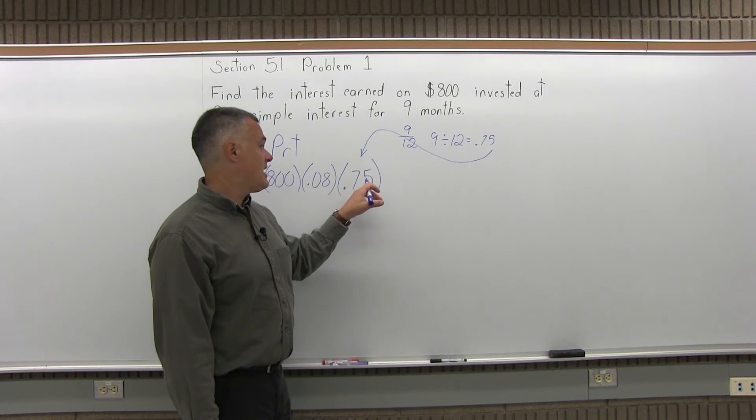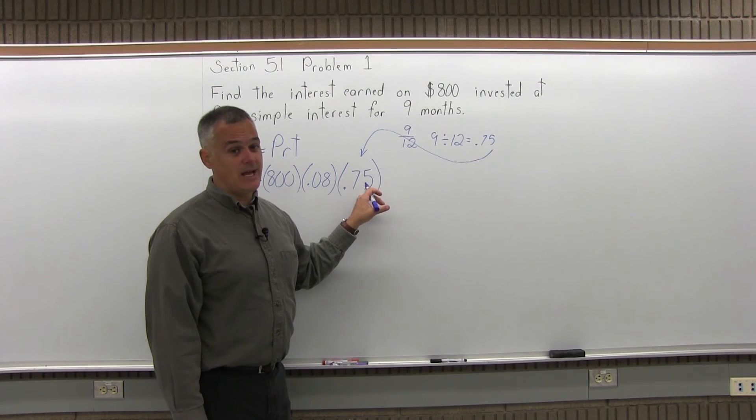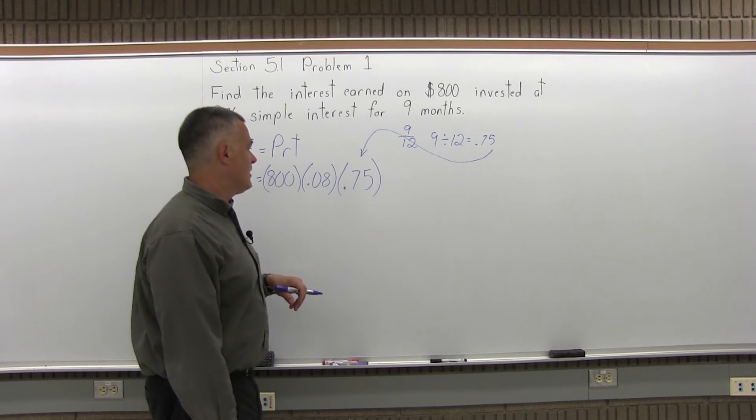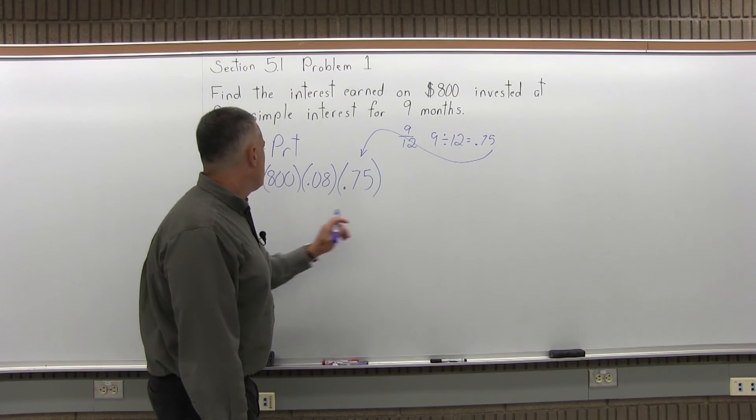So it's important that you enter the time in years. Again, 9 months is 3 quarters or 0.75 of a year. And now you can multiply going across.